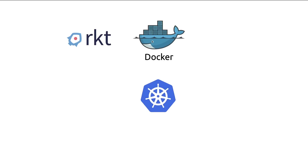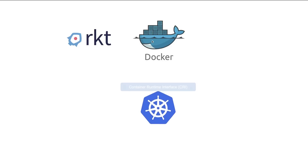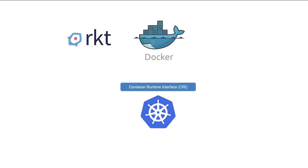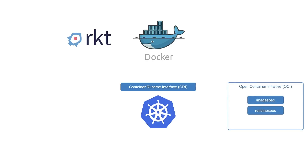So Kubernetes introduced an interface called the Container Runtime Interface, or CRI. CRI allowed any vendor to work as a container runtime for Kubernetes as long as they adhere to the OCI standards. OCI stands for Open Container Initiative, and it consists of an image spec and a runtime spec.